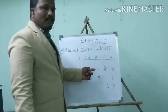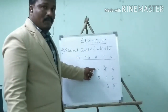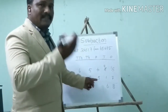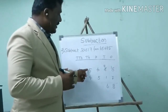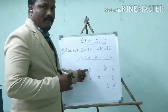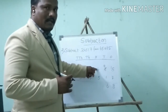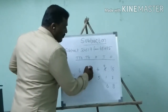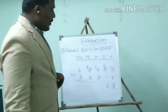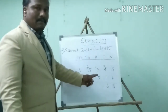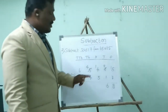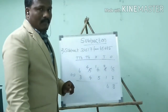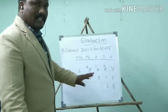Again, same problem — the minuend is smaller than the subtrahend, so we have to borrow from the near number. The near number is 5. If you borrow one, here it becomes 4 and here it becomes 14. Now the minuend is a big number. So 14 minus 5 equals 9. 9 is the difference.